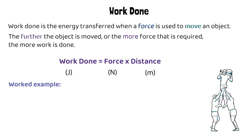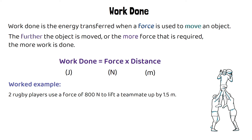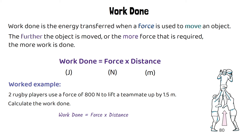Here's an example of how this equation would be used. Two rugby players use a force of 800 newtons to lift a teammate up by 1.5 meters. Calculate the work done. We're going to use the equation work done equals force times distance. We identify the numbers: 800 newtons is the force and 1.5 meters is the distance. So work done equals 800 times 1.5, which gives a work done of 1200 joules. That means 1200 joules of energy was transferred to lift that person.